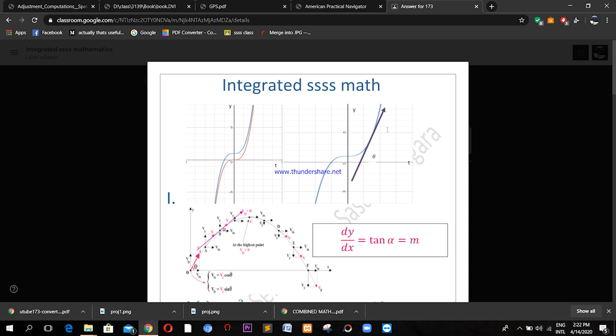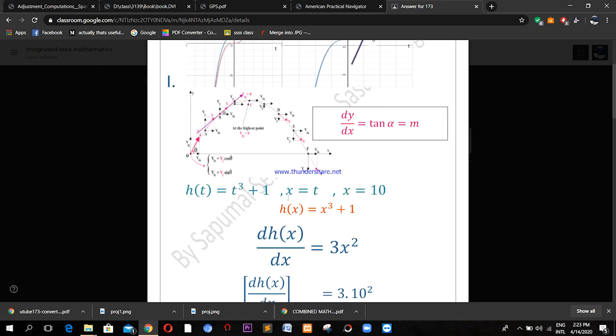In the next figure that I have pointed now, you can see here vertical height has been plotted against time. Here x = t, they have mentioned that in the question. Now then parametrically we are able to remove the time from this function, then thereafter h(x) = x³ + 1.